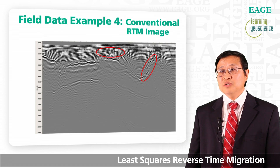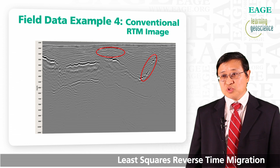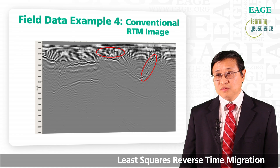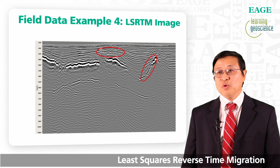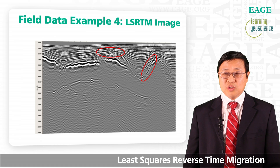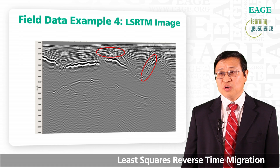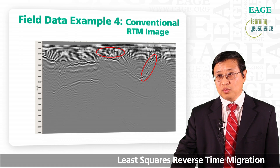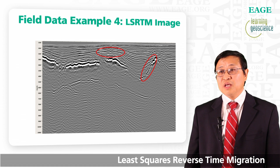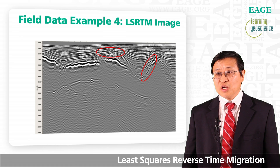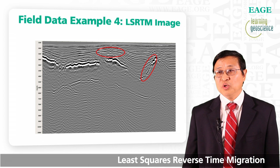In the next example, regular RTM shows the deep portion with much weaker amplitude. Least squares RTM gives more balanced amplitude because it approaches true amplitude. In the shallow highlighted area, compared with regular RTM, least squares RTM gives higher resolution and a deconvolution effect. Least squares RTM also improves the steep dip image on fault boundaries.